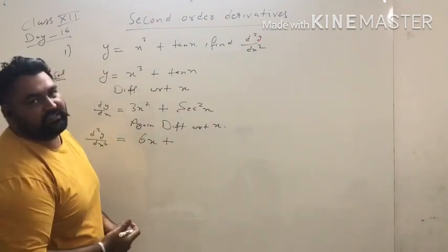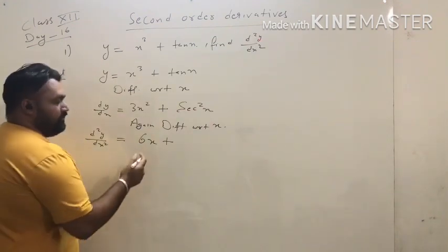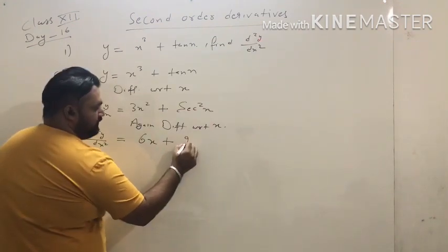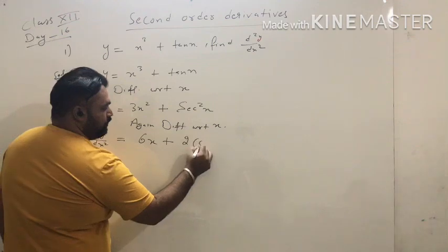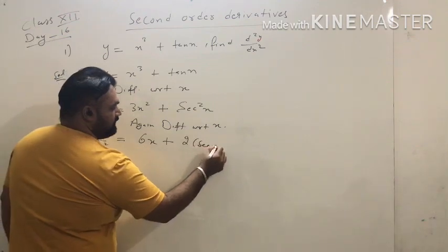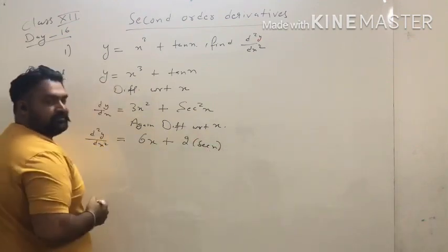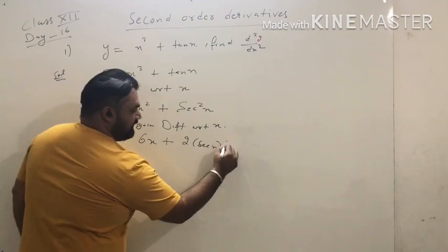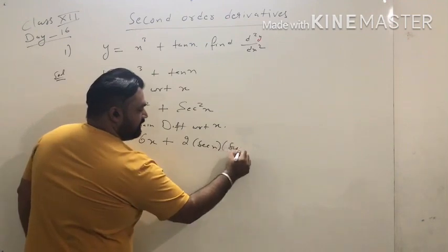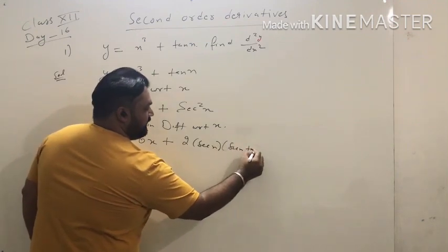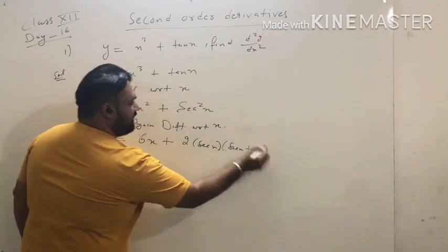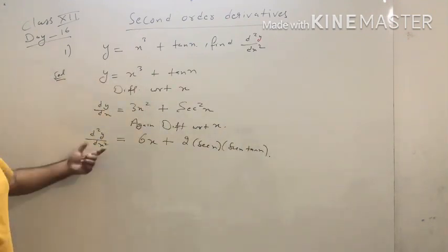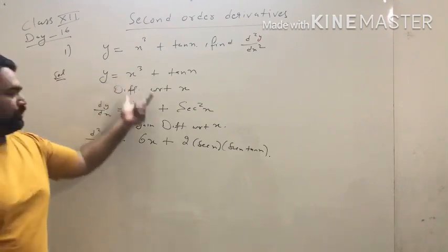What is the derivative of secant squared x? The derivative of secant x is secant x tan x. So using the chain rule, the derivative of secant squared x is 2 secant x · secant x tan x. So the final answer of this question is d²y/dx² = 6x + 2 secant²x · tan x.